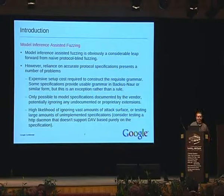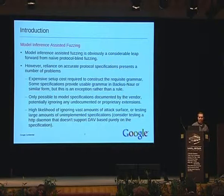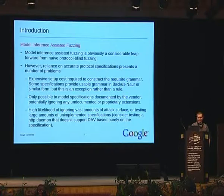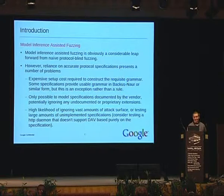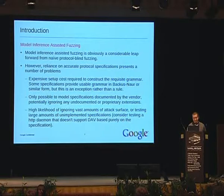Another problem is that it's only really possible to model the specifications that the vendor has documented. If there are undocumented features or debugging features — say you're fuzzing an HTTP server based on the RFC, but it supports some proprietary features the vendor hasn't documented — then there's no way you're going to touch that code. This is important because that's often where a lot of the bugs are going to be. Also, if the web server you're fuzzing doesn't support something like DAV, then you're wasting a lot of time fuzzing that portion of the protocol, hitting very little code.